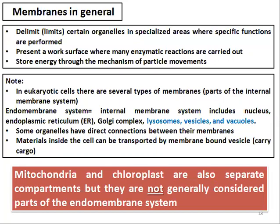It stores energy through the mechanism of particle movement. In eukaryotic cells, there are many types of membranes: the plasma membrane, the nuclear membrane, the endoplasmic reticulum membrane, the Golgi membrane, the lysosome membrane, the physical membrane, and the vacuole membrane. All these organelles belong to the endomembrane system. The endomembrane system means the membranes of the nucleus, ER, and similar organelles are considered part of the same system. However, some organelles are not considered part of the endomembrane system.